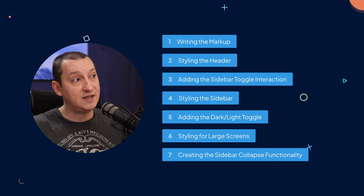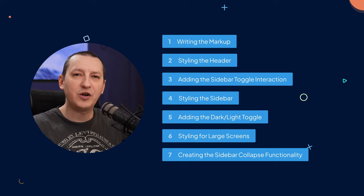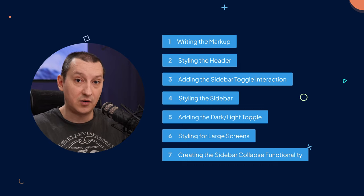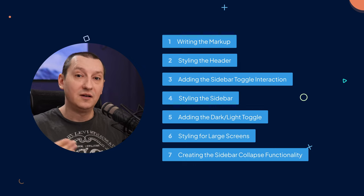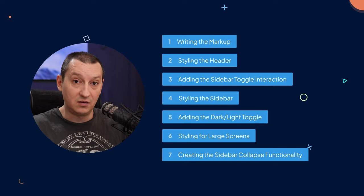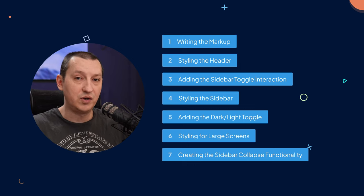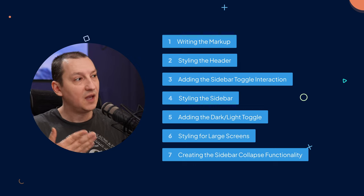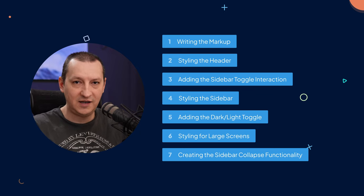My name is Adi, I'm a web designer and developer, and we're gonna split this course the following way. First, we'll write all the necessary markup, and I'll show you a very cool technique for using SVG sprites. In lessons three and four, we'll style the header and create the sidebar toggle interaction. In lesson five, we'll style the sidebar. Then we'll create the dark and light toggle, which saves the option in local storage so it's gonna be remembered next time. And in the final two lessons, we'll style our dashboard for large screens and create the sidebar collapse functionality.